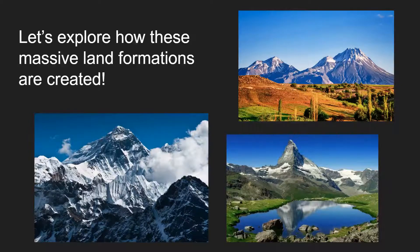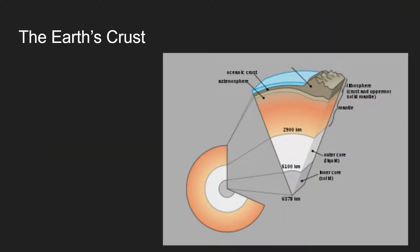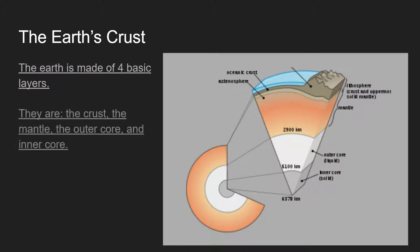Let's go back and look at the Earth's crust. We need to know four layers: the Earth is made of four basic layers — the crust, the mantle, the outer core, and the inner core. You have to know those four.